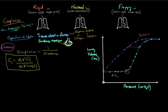As pressure starts to increase, we reach a point where things start to change — a marked change in compliance. This is called the lower inflection point, or LIP. This is really where those small airways start to open and the lung starts to become a lot more compliant. A given increase in pressure on this part of the curve results in a much larger increase in lung volume — this is where we have increased compliance.